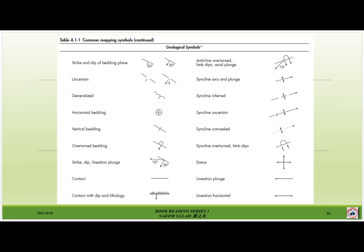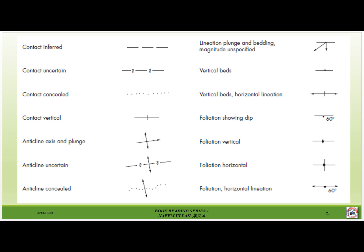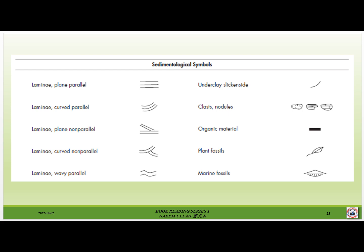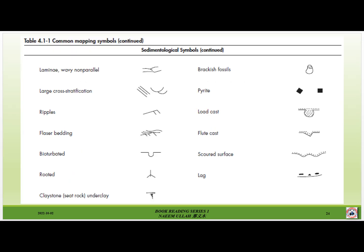Table 4.2 shows common mapping samples — geological samples — which you can use by mentioning the dip and strike and others. There are also some different samples which can be shown on your map, such as cleavage, vertical cleavage, horizontal cleavage, and so on. Sedimentological samples: these are some samples which you have to represent on your map, such as parallel laminae, curved parallel laminae, and suggested marine fossils, plant fossils, and so on.